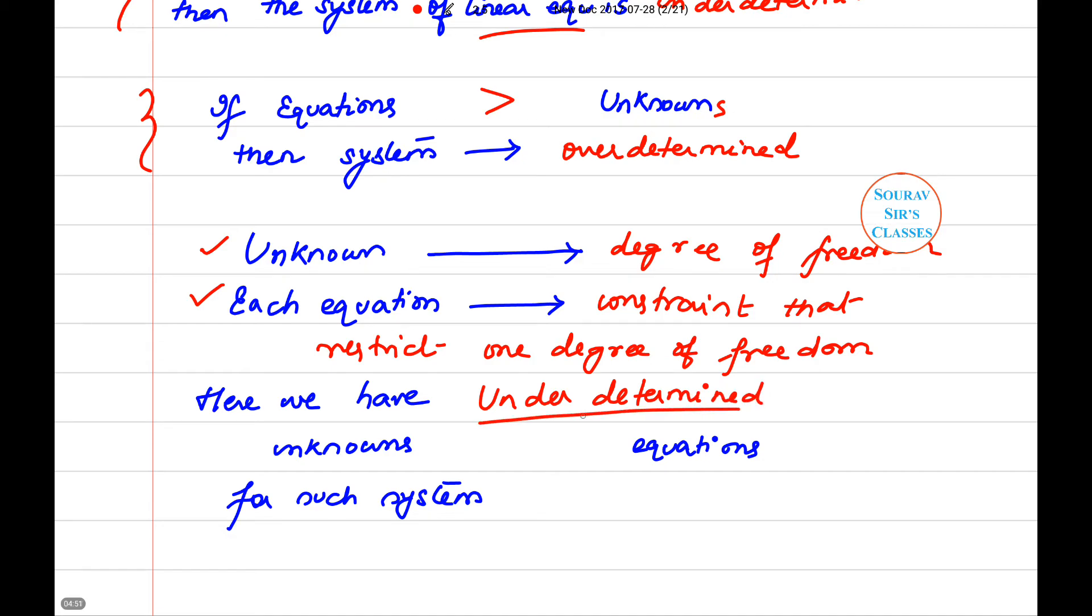That means the set of linear equations will be under-determined as the number of unknowns is greater than the number of equations. And for such a system, we will never get a unique solution.